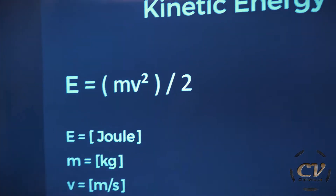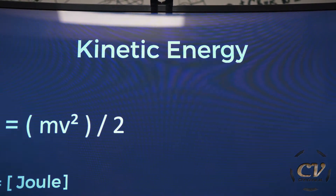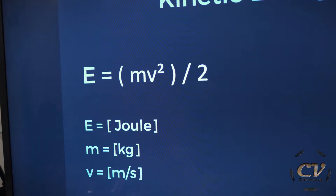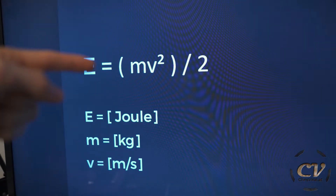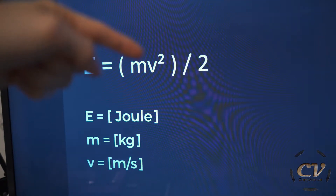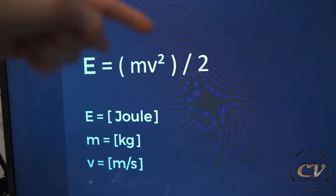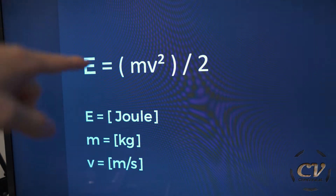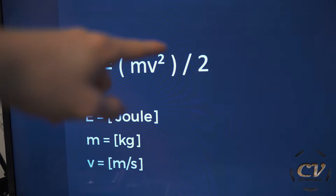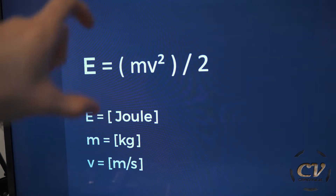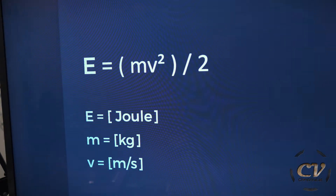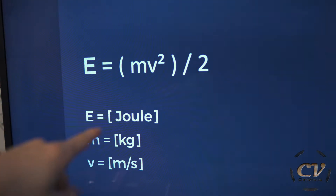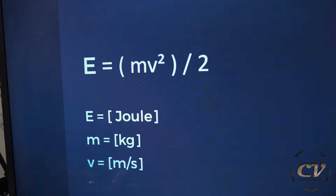Let's proceed to the kinetic energy, the main formula that we want. Energy equals mass times speed squared divided by 2. I made it super obvious with brackets and all. Energy is measured in Joules.